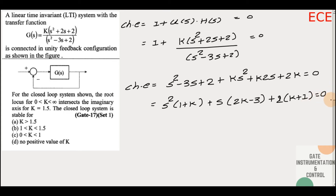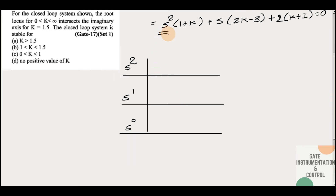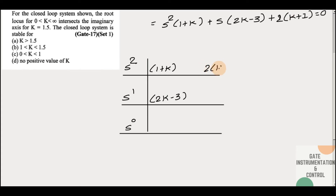This is our final characteristic equation. Now we apply the Routh-Hurwitz stability criterion. The maximum power of s is 2, so we have rows for s², s¹, and s⁰. The coefficient of s² is (1+k), the coefficient of s¹ is (2k - 3), and the coefficient of s⁰ is (2k + 1).